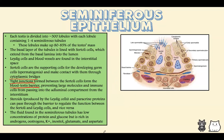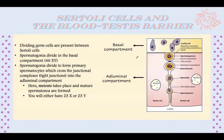The tight junctions between Sertoli cells exist after the spermatogonium. The spermatogonium is a 46XY cell — a normal somatic cell. But it undergoes meiosis, producing haploid cells that are 23X or 23Y. These haploid cells are not something the body usually encounters. So immune cells will look at them, recognize them as foreign, and start attacking them — leading to sterility. The Sertoli cells form tight junctions to protect these developing spermatozoa from the body's immune response.